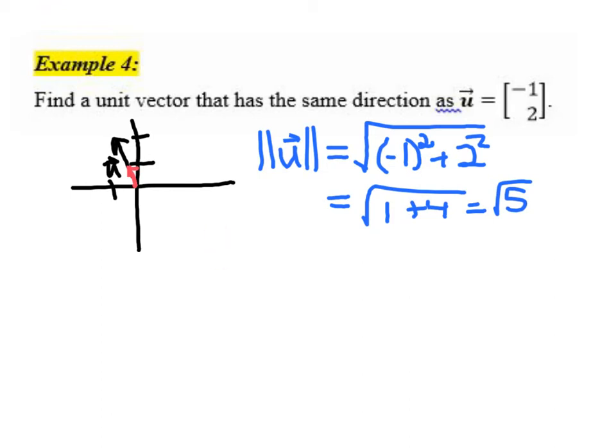Right now, this thing has length square root of 5. So if I multiply by 1 over the square root of 5 out front, then that should give this thing length 1. So 1 over the square root of 5 times u, negative 1, 2.